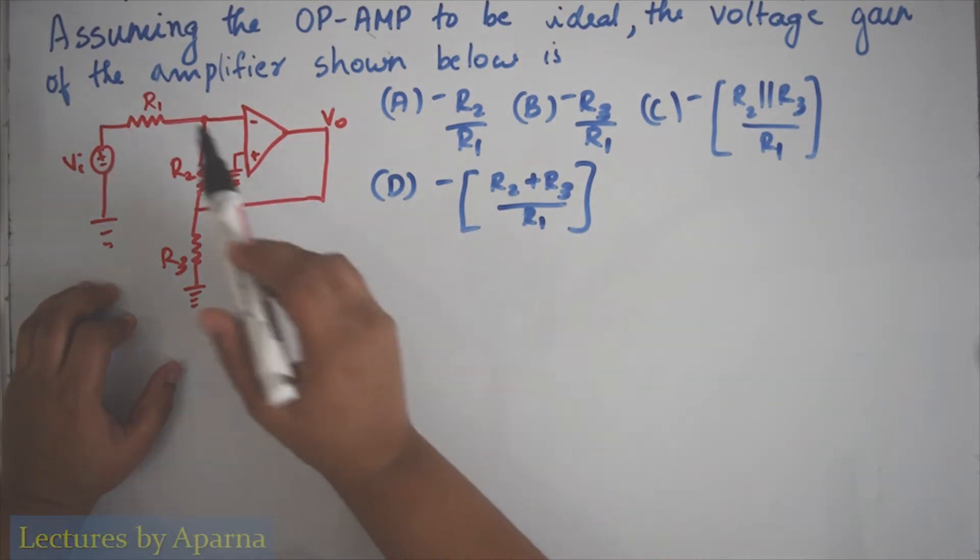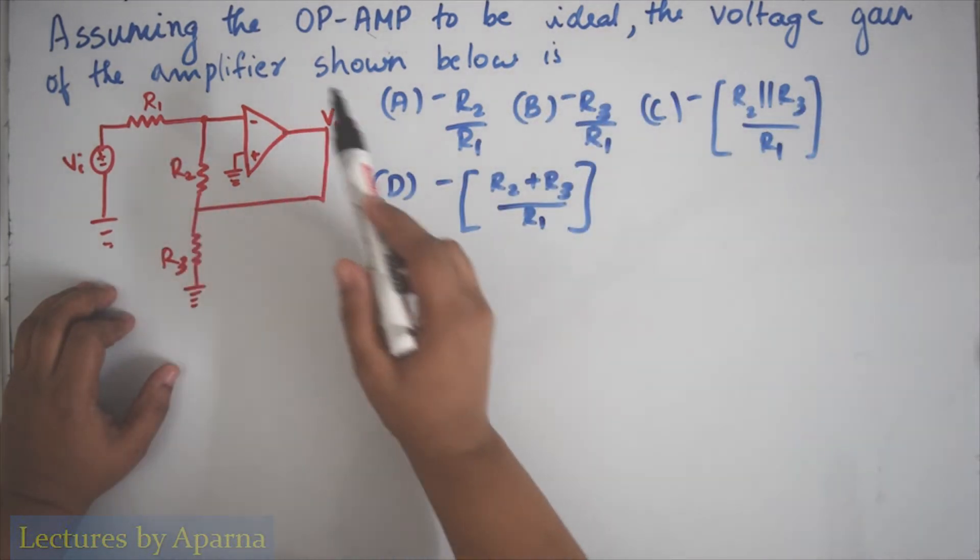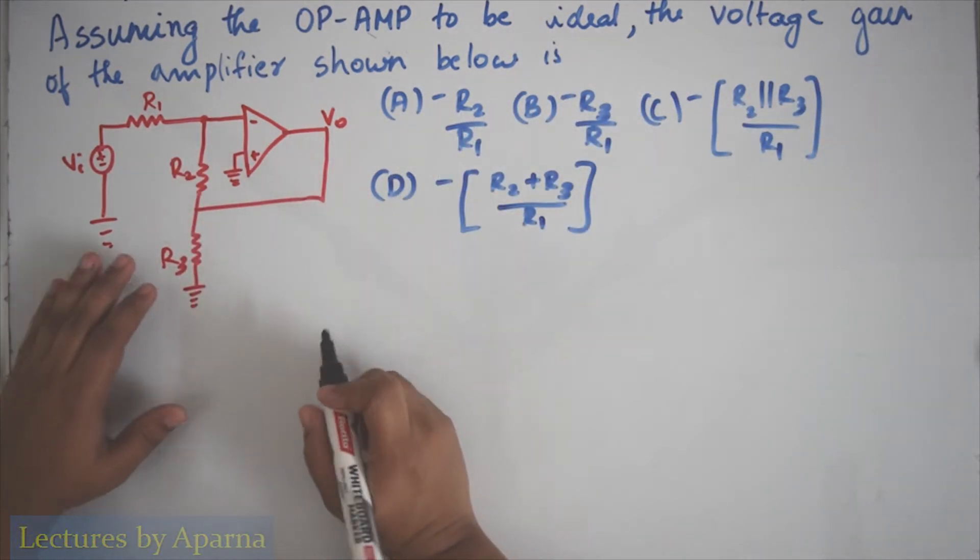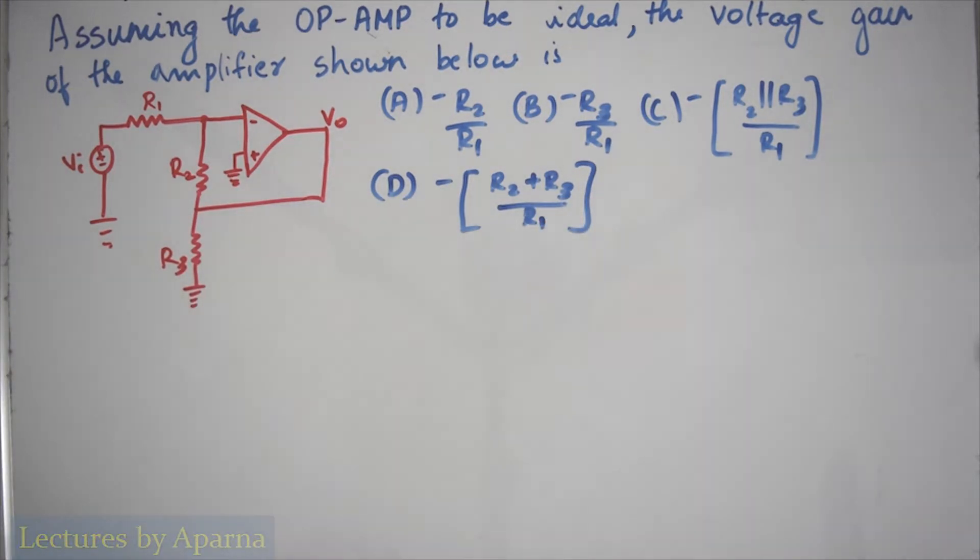I will read the question. Assuming the op-amp to be ideal, the voltage gain of the amplifier shown below. This is the circuit. I have four options. Let's start analyzing the circuit.